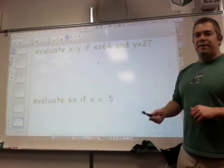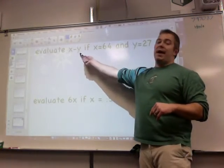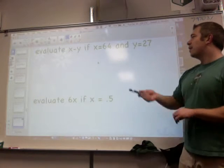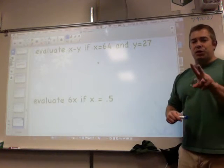We have a couple more examples here. We're going to evaluate x minus y. This time we got a little more complicated because x will equal 64 and y equals 27. They gave us two variables.